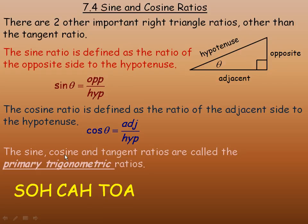Between the three of them, the sine, cosine, and tangent ratios are called the primary trigonometric ratios. There are actually three others that you'll study in the grade 11 course, the 3U course.